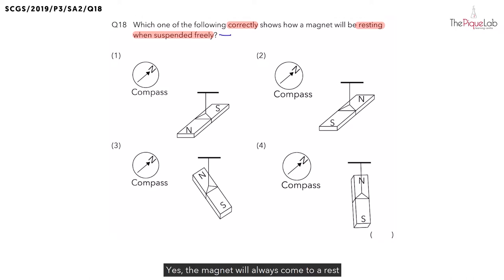Yes, the magnet will always come to a rest in the north-south direction. So let's write that down. It will come to rest in the north-south direction.